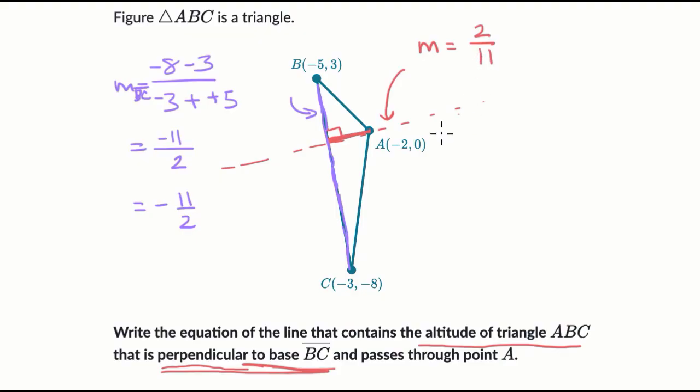So we know the slope, and we know a point that sits on that line, point A. In fact, we knew it had to go through point A. So how do we figure out the equation of that line? Well, we have a point, and we have a slope. Maybe point-slope form will be helpful.